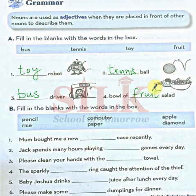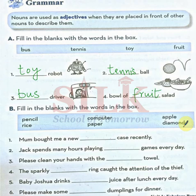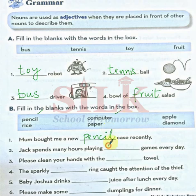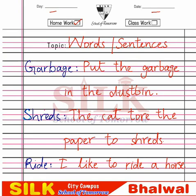B part mein dekhi hai — fill in the blanks with the words in the box. Box mein yeh words diye gaye hain: pencil, computer, apple, rice, paper, timers. In words ko humne blanks mein write karna hai. Mom bought me a new dash case recently — mom ne mujhe abhi abhi ek box leke diya. Kaunsa box? Pencil box — very good. Pencil bhi adjective hai. Jack spends many hours playing dash games everyday — Jack jo hai, woh kaunsi games khelne mein time spend karta hai? Computer games. Computer bhi as adjective use hua hai. Baaki ki blanks bhi aap yun hi fill karenge. Neatly fill karenge aap log, aur fill karne ke baad aap usko learn bhi karenge.